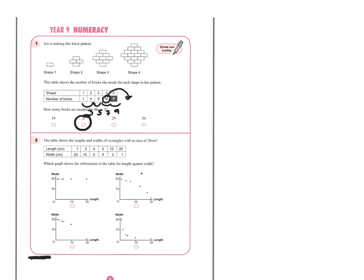Question two: the table shows the length and width of rectangles with an area of 20 square centimetres. We need to find which graph shows length against width, where length is on the horizontal axis and width is on the vertical. I'll check a few values — when length is one, width is 20.